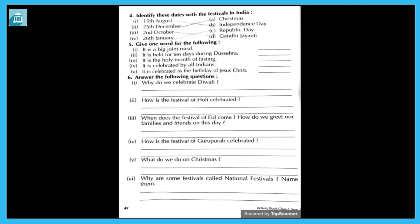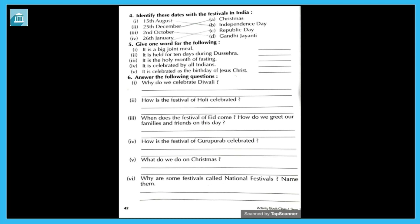Now turn the page. Question four: identify these dates with the festivals in India. First one: 15th August — answer is b) Independence Day. 25th December — answer is a) Christmas. 2nd October — answer is d) Gandhi Jayanti. And 26th January — answer is c) Republic Day. Done.